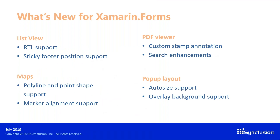The next set of features are from list view, maps, PDF viewer, and popup layout. In list view, we've provided right-to-left support and sticky footer position support, so the footer always remains in position when you scroll. In maps, we've provided support to render polylines and shapes — the polyline is used to render any path over a map, like river flow in an area or driving directions from one place to another. We've also enhanced marker alignment in maps. In PDF viewer, we've added support for custom stamp annotation along with search enhancements. In popup layout, we now support auto-sizing the layout based on content, and you can set a background color to the overlay when a popup appears.